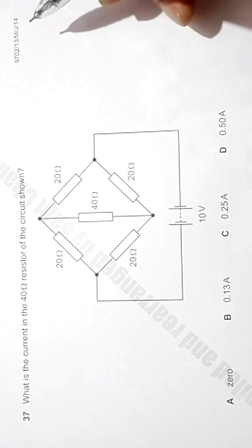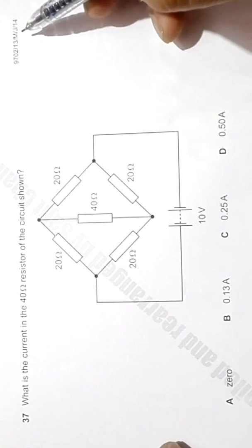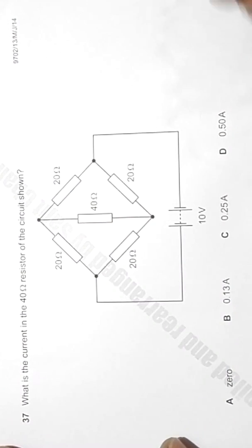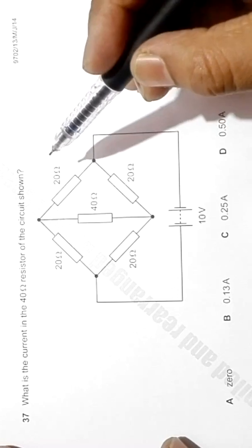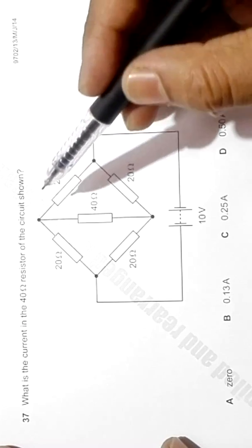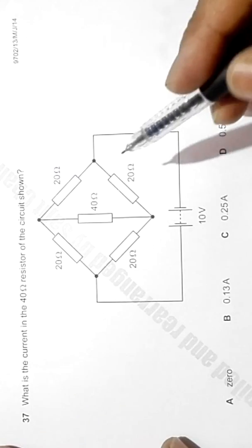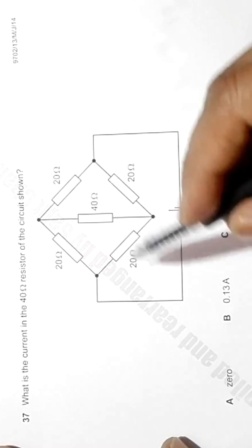This is the question of 2014 major paper 13, question number 37. This question shows a mesh or a group of resistors with 20 ohm resistors at the four edges.